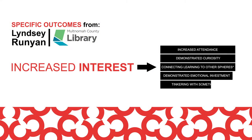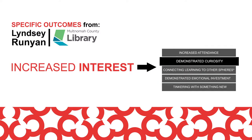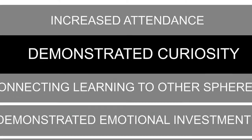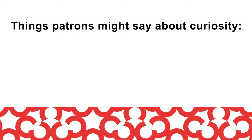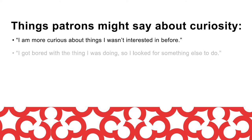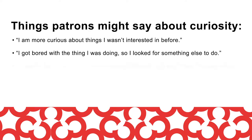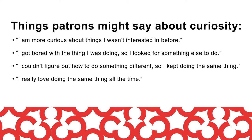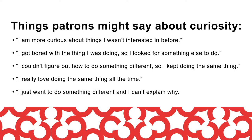In our last video, we looked at the outcomes and indicators that our Multnomah partnered library was interested in evaluating. Lindsay wanted to understand if program participants are increasing their interest in the topic of the program, and one way she thought she would see this is if they demonstrated curiosity. For the talkback board, we wanted to provide a range of possible things that Multnomah library patrons might say about curiosity: 'I am more curious about things I wasn't interested in before,' 'I got bored with the thing I was doing so I looked for something else to do,' 'I couldn't figure out how to do something different so I kept doing the same thing,' 'I really love doing the same thing all the time,' and 'I just want to do something different and I can't explain why.'